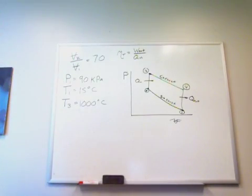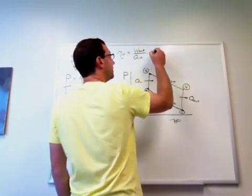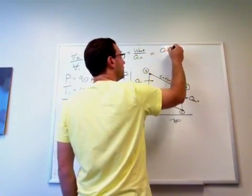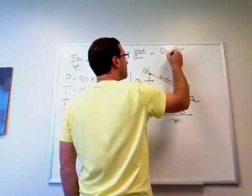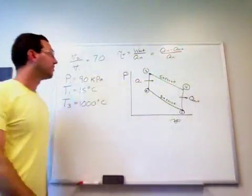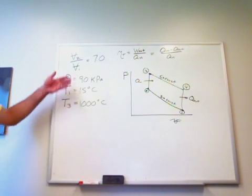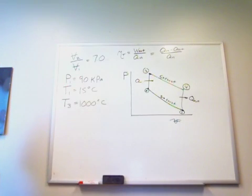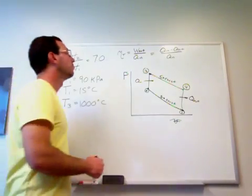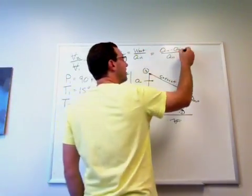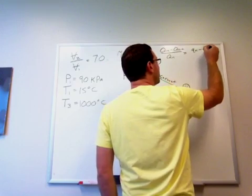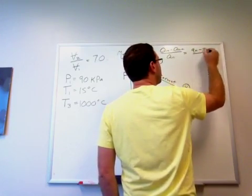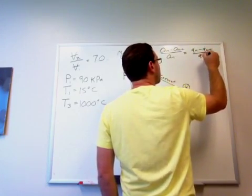So we can say work out is going to be Q_in minus Q_out over Q_in. It's our efficiency, and we can divide by mass. We don't know anything about the mass in the cylinder, but if we divide the top and bottom by the mass, we end up with q_in minus q_out over q_in.